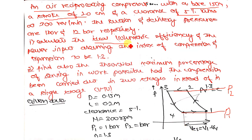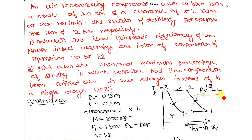Calculate: (1) the ideal volumetric efficiency — you have a formula for this derived in the theoretical part; if you have any doubt, kindly watch that again. (2) The power input, assuming the index of compression and expansion is 1.3 for both processes. (3) The theoretical maximum percentage saving in work had the compression been carried out in two stages.